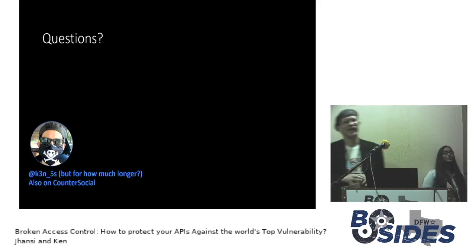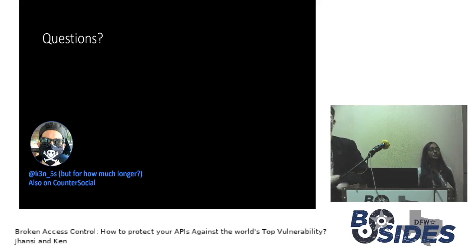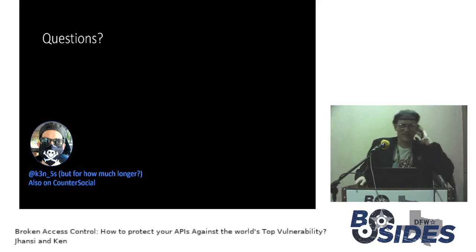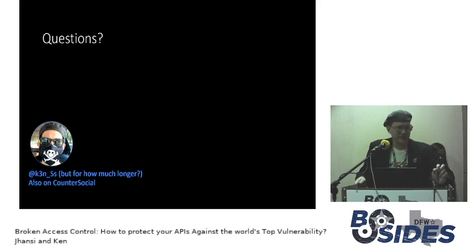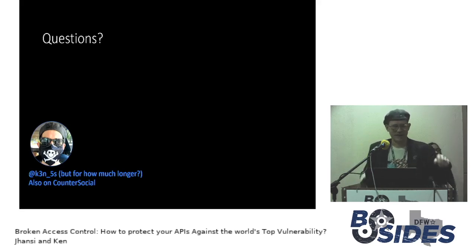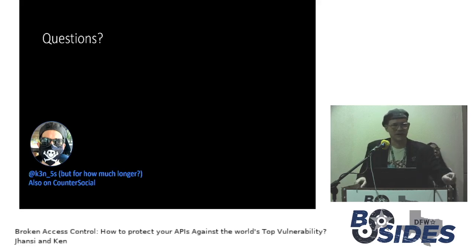Question: what was that 'deputy' weakness? The answer is Confused Deputy. Sometimes you'll see a picture of Barney Fife from the Andy Griffith Show. Basically, any time you can get someone else to make an action using their credentials instead of your own — instead of an on-behalf-of relationship — there's an opportunity to exploit it.